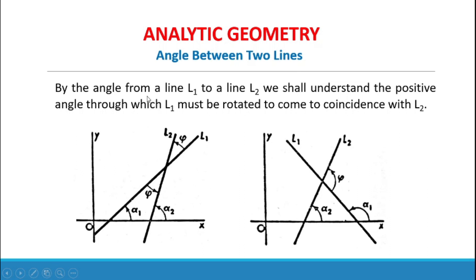The angle between two lines: by the angle from a line L1 to a line L2, we shall understand the positive angle through which L1 must be rotated to come to coincidence with L2. In the diagrams, to find the angle from line one to line two, the direction should be counterclockwise.